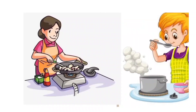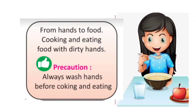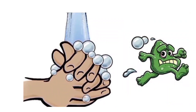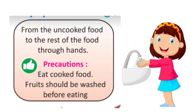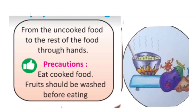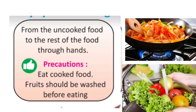Number three: germs spread from hands to food by cooking and eating food with dirty hands. Precaution: always wash your hands before cooking and eating. Germs are also spread by hands from raw food to the rest of the food. Precaution: food should be cooked properly and fruits should be washed before eating.